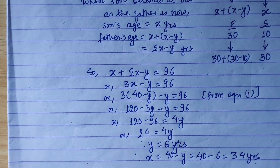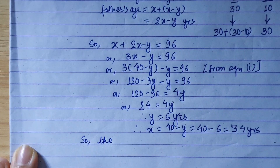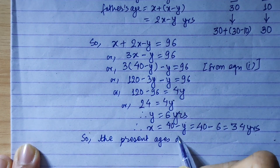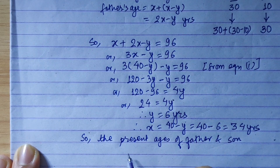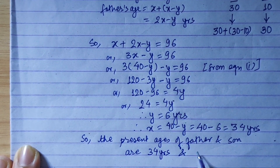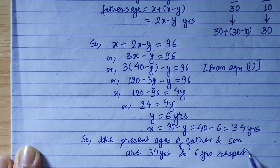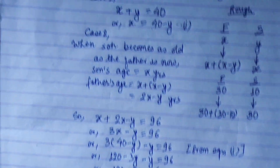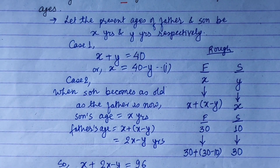Ok, so as a conclusion, the present ages of father and son are 34 years and 6 years respectively. Complete — so concept is clear easily. Thank you.